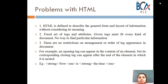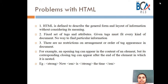The second problem with HTML is that it has a fixed set of tags and attributes. The given tags must fit every kind of document, with no way to find particular information — you have to search the entire document. If you want a specific part of information, you cannot find it immediately. The third problem is there are no restrictions on the arrangement or order of tag appearance in a document.